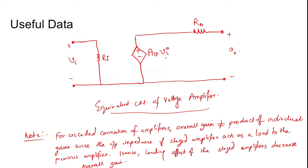The equivalent circuit of a voltage amplifier has the input voltage connected to an input impedance, and then the gain Av times Vi. The output impedance is shown, and this gives Vout. A common error is that students tend to take the overall gain to be the product of the individual gains for a cascaded connection of two amplifiers — this is not true because the loading effect comes into action. The input impedance Rin of the second and later stages acts as a load to the output of the previous amplifier.